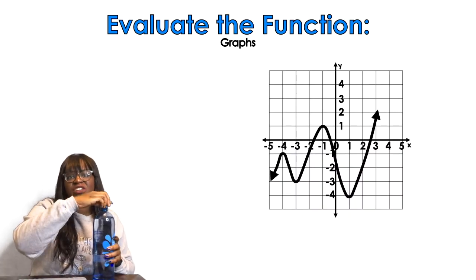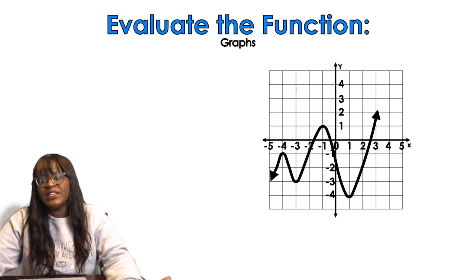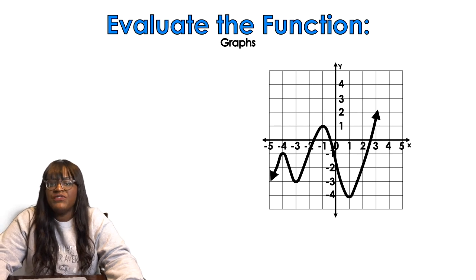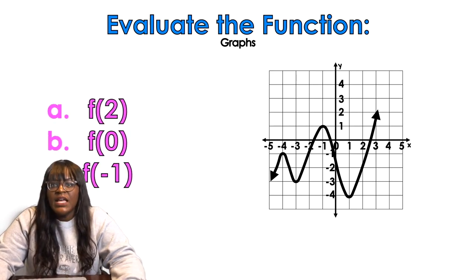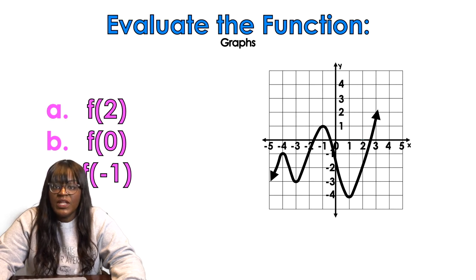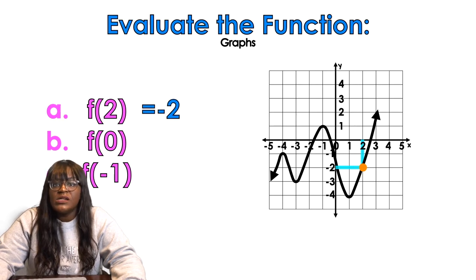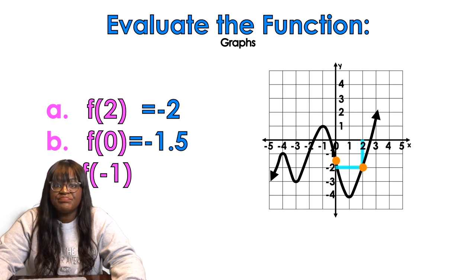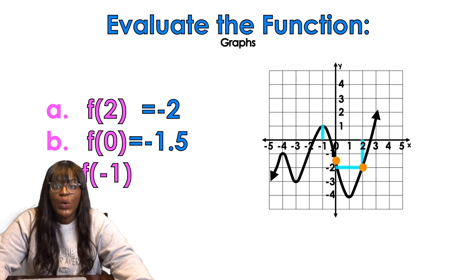So now we're going to look at evaluating functions based on their graph. When I evaluate functions based on my graph, this is honestly the easier part because if I'm looking at 2, I'm just going to find 2 on the x-axis and find where the function meets 2 on the x-axis. And look at that, it meets at negative 2. So guess what my answer is? Negative 2. The next one is 0. There's not really anything to slide down for 0, so I'm just going to notice that it's at negative 1.5. So negative 1.5 is my answer. And then when we plug in negative 1, I'm going to notice I need to slide up a little bit to the function, and that's going to give me a positive 1. So that is my answer for that one.